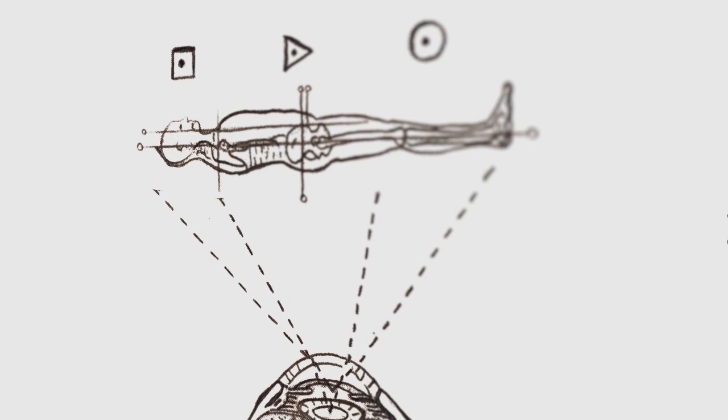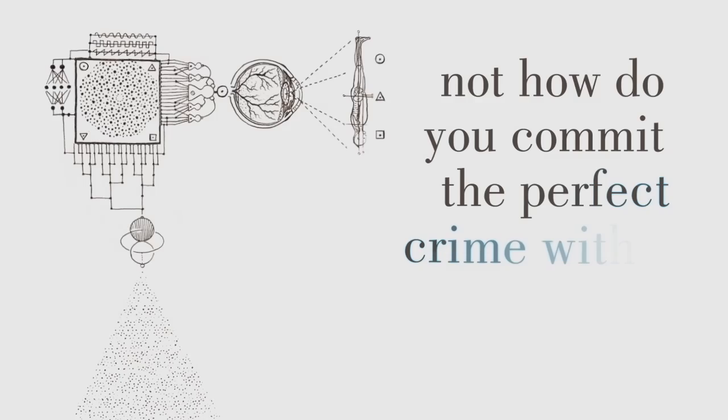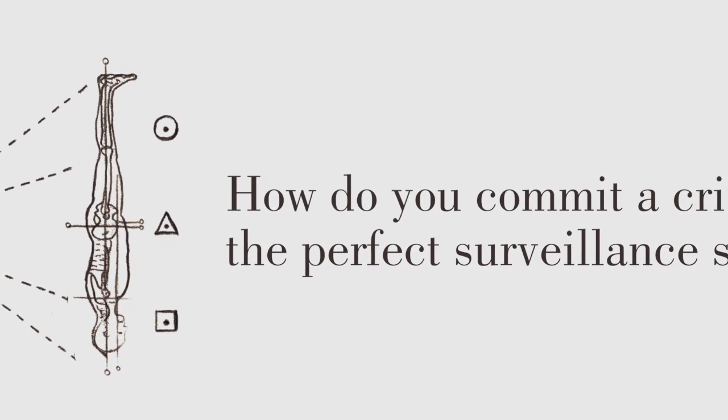So I started thinking, how do you commit a crime? Not how do you commit the perfect crime within society, but how do you commit a crime in the perfect surveillance society?